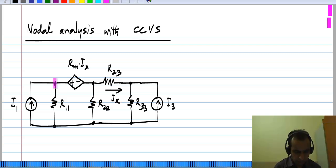In this case the current controlled voltage source is connected between nodes 1 and 2, and its value is given by some R m, a proportionality constant times I x, and I x is defined that way.